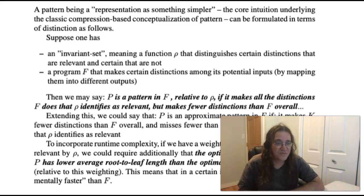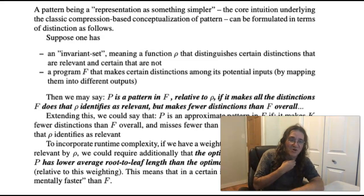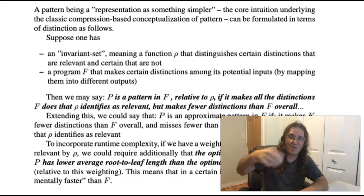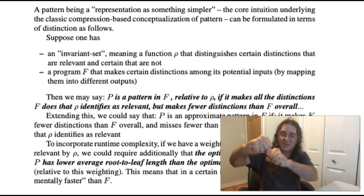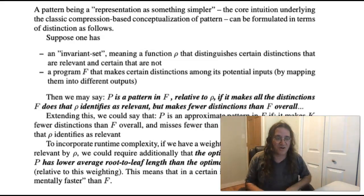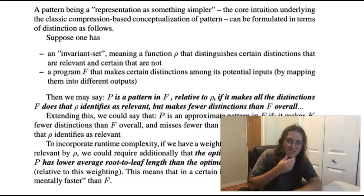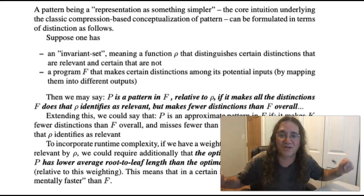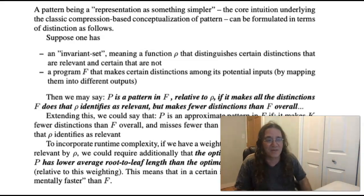But the notion of pattern is a little more general than that notion of algorithmic information. We can formalize pattern in terms of distinction. If we have say a function ρ or a relevance or invariance function, ρ tells you which distinctions you care about and which ones you don't care about, which are relevant and which aren't. So if you then have a program f that makes certain distinctions between inputs by giving different outputs for them, you could say p is a pattern in f if it makes all the same relevant distinctions as f does but fewer distinctions overall. And that under the right assumptions boils down to being the same as the algorithmic information theory characterization of pattern. You can extend this in various ways. You can extend it to what does it mean for one program to be an approximate pattern in another.